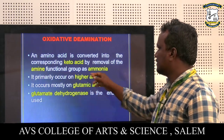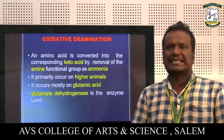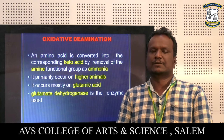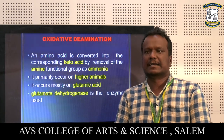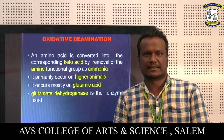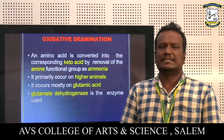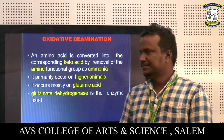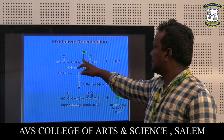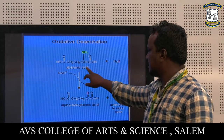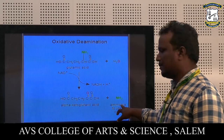What is oxidative deamination? An amino acid is converted into the corresponding keto acid by removal of the amino functional group as ammonium. It primarily occurs in higher animals. It occurs mostly on glutamic acid, and glutamate dehydrogenase is the enzyme that catalyzes it. In oxidative deamination, glutamic acid is converted to alpha-keto-glutamic acid with removal of the amino group.